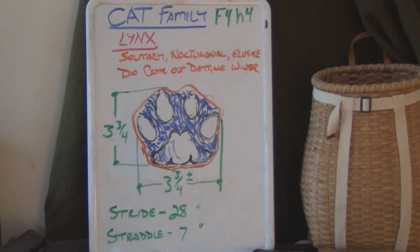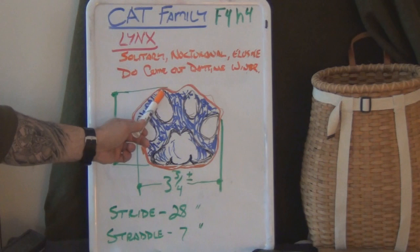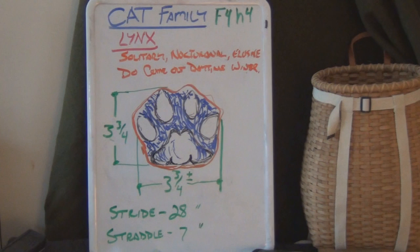If you do get to look at their pads, all the principles apply: two lobes on top, three lobes on the bottom, teardrop toes, inside toe being larger than the outside toe, and of course a leading toe for that foot. Their stride is about 28 inches and their straddle winds up being 7 inches while they are in their walking stride.